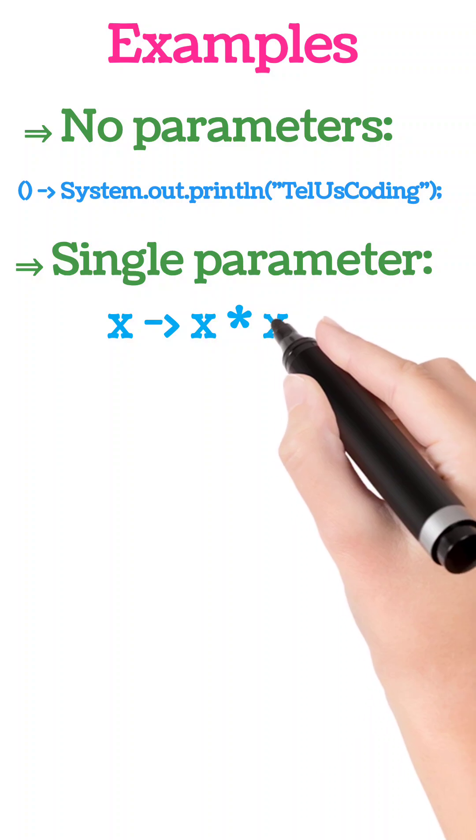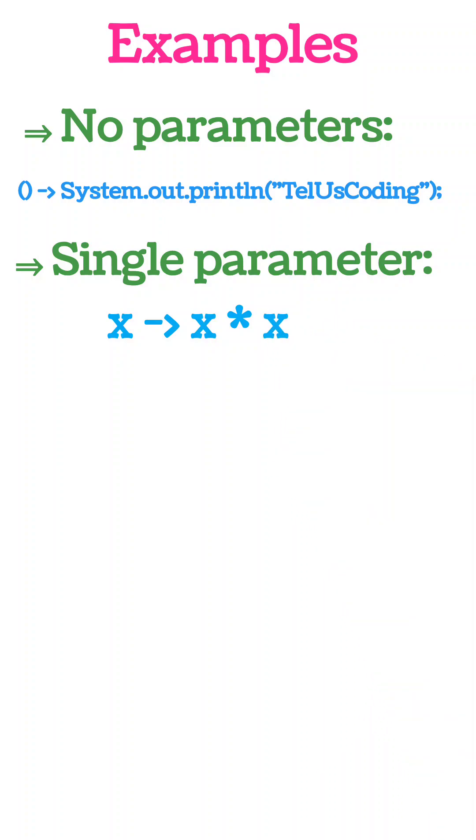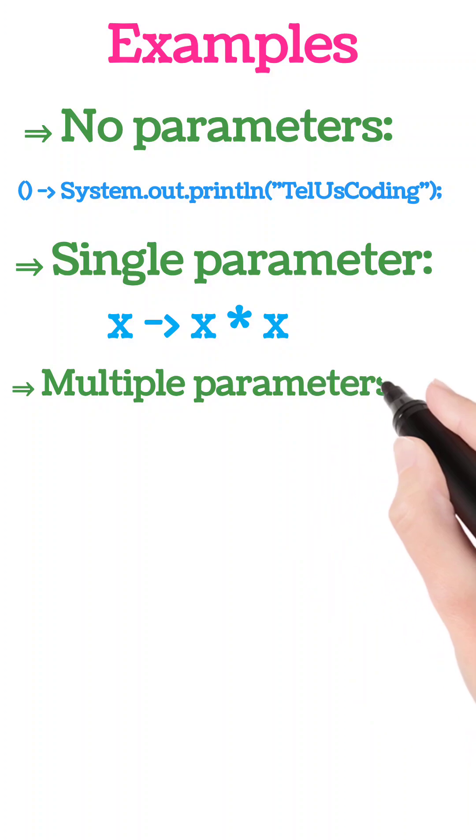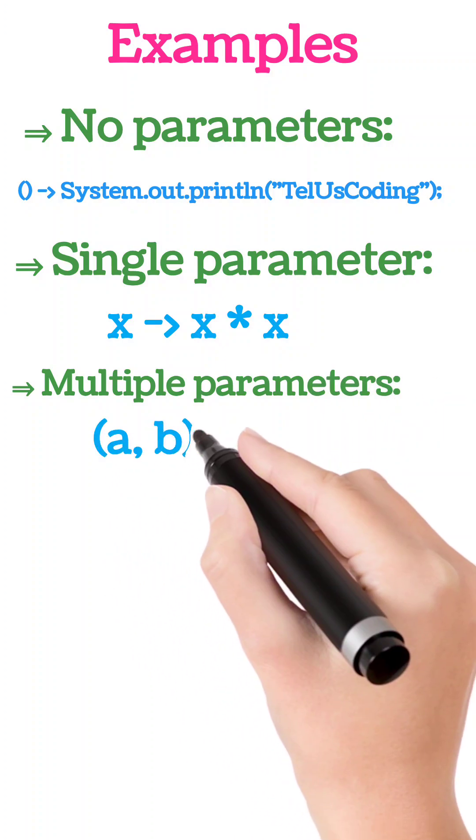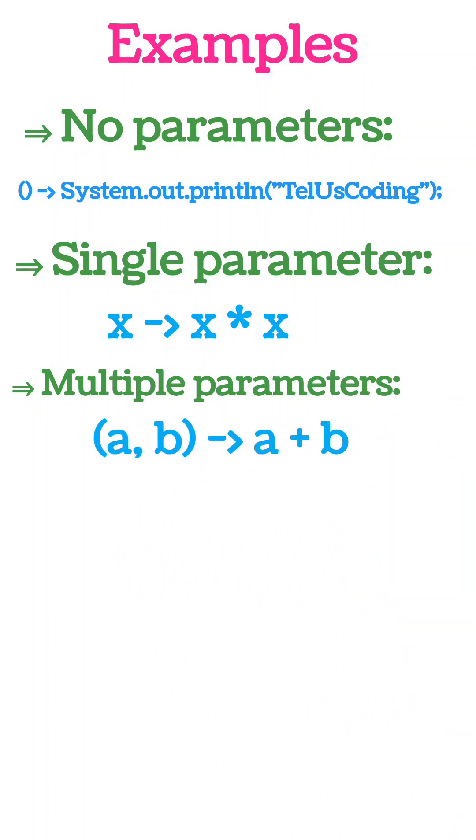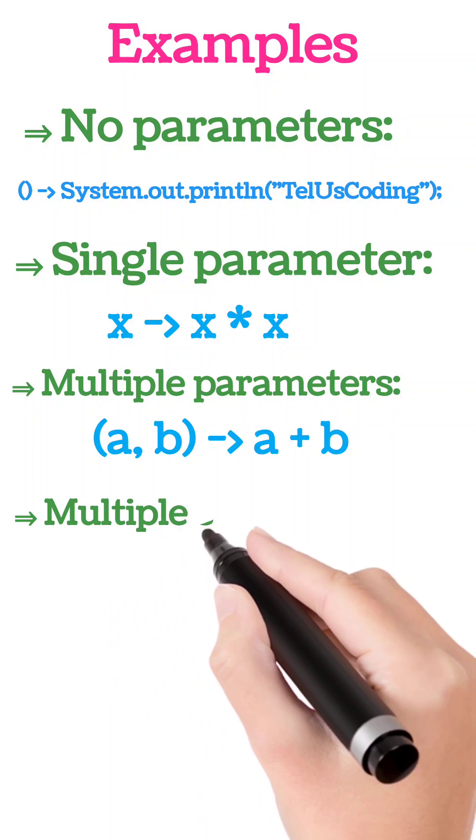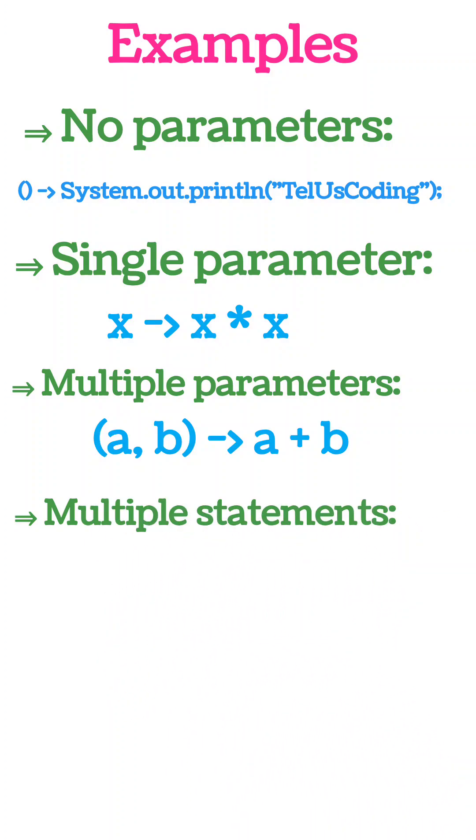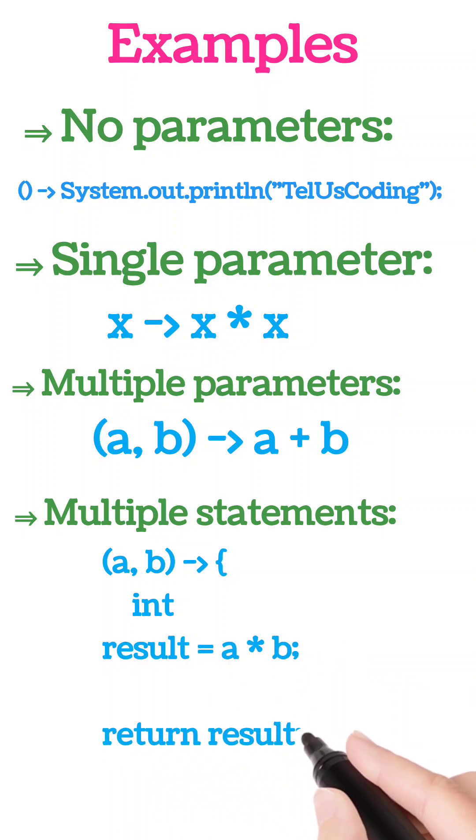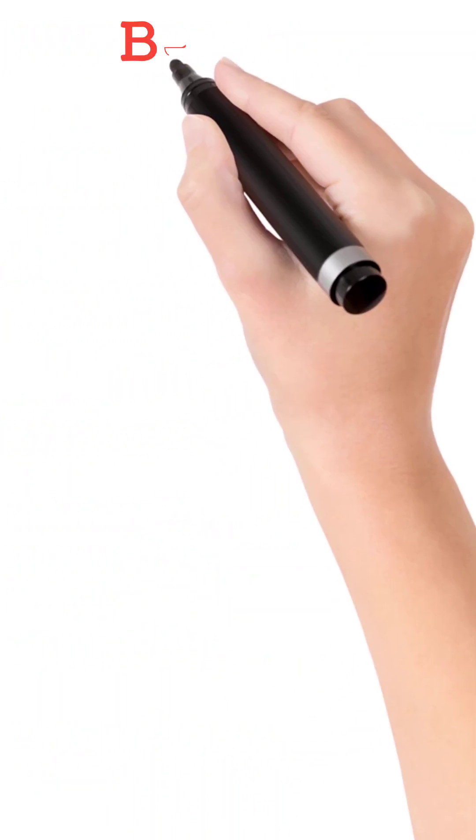For multiple parameters, suppose a and b, and after the arrow token you can add or multiply like that. For multiple statements, you can write statements in curly braces. Let's see the benefits of lambda expressions.